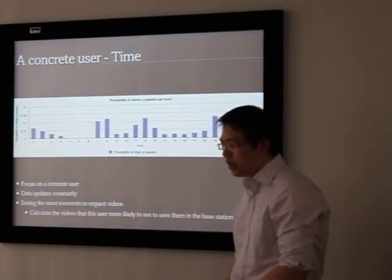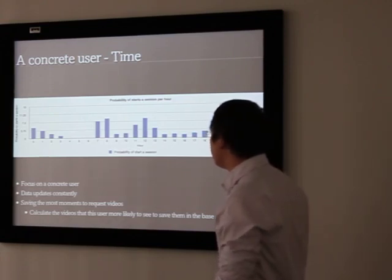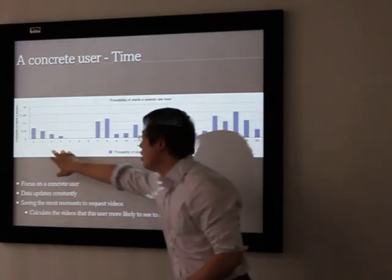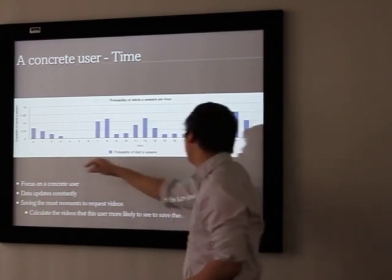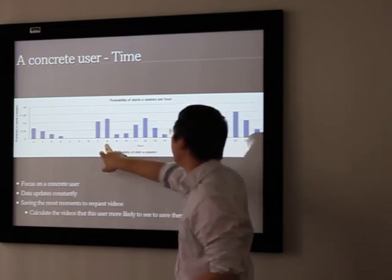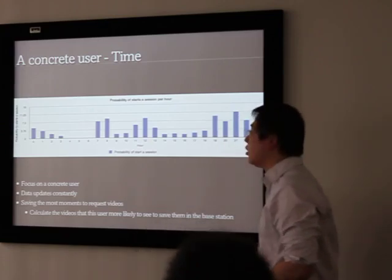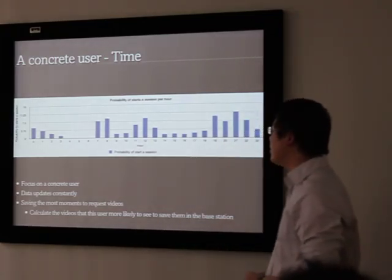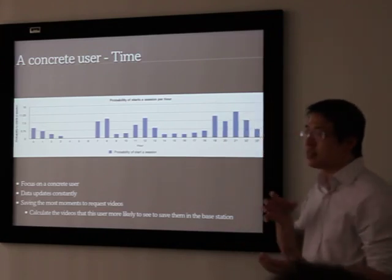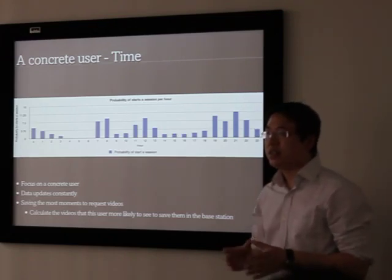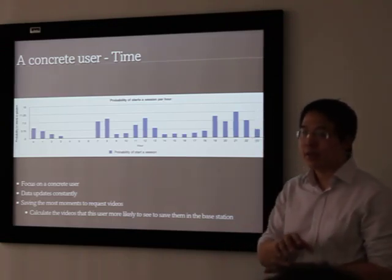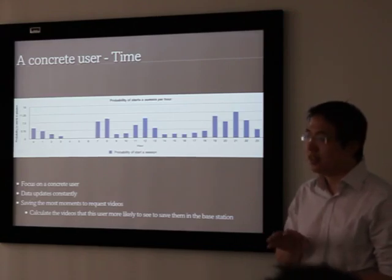Another scenario we can use is about time. For a concrete user, we can see more or less the probability that this user watches the video. This is a graphic from hour 0 to hour 23. You can see that this user usually watches the video from 7 to 8 o'clock and from 11 to 12 o'clock and also after 7 o'clock. With this kind of information and knowing which kind of video that this user usually watches, you can even save the data in his mobile phone before he requests it with certain probability. So if the probability is high, the user doesn't have to request more information, because this information I have stored before that he requests in his mobile phone.